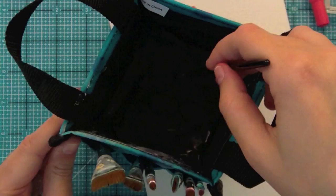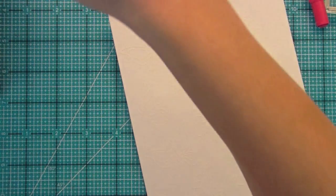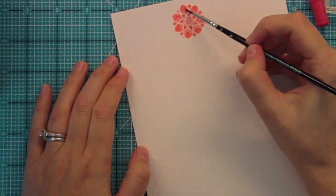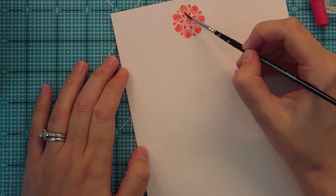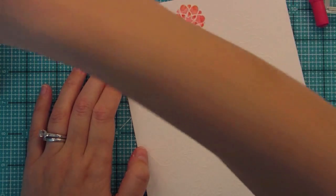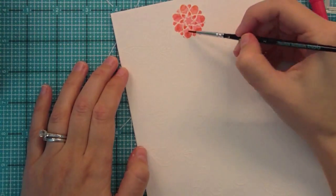Right now I'm just getting some water on my paintbrush and I'm going to start blending all of these colors together. Now the more water you add the more sort of light and watercolor-y it gets and the less water you add it'll be a little bit more vibrant.